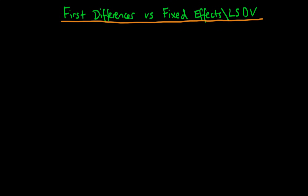In this video I want to compare first differences estimators with those of fixed effects estimators, or equivalently least squares dummy variables, because we need a way of deciding which technique to use. It turns out that if we're just considering a panel with two time periods, there is no difference between these two estimation strategies. First difference estimators are absolutely equivalent to those of fixed effects, so there's no need to worry about the difference.